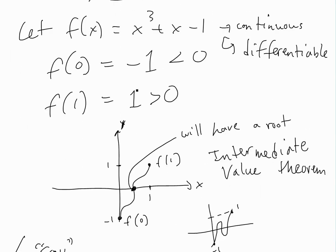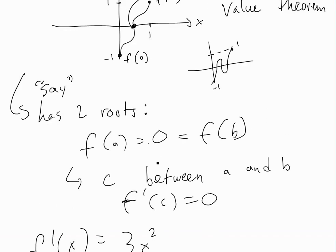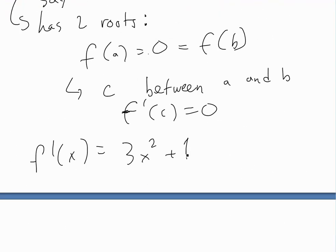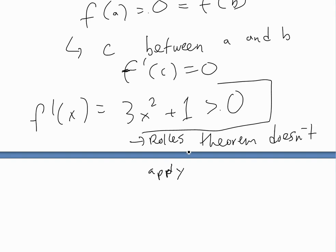If we take the derivative of f of x equals x cubed plus x minus one, we get f prime of x equals three x squared plus one. But as you can see, even if you put a negative number in, three x squared is always positive, so three x squared plus one is always greater than zero. The lowest value is when x equals zero, giving one. So f prime is always greater than zero — this contradicts the requirement that f prime of c equals zero.